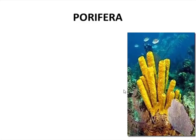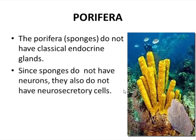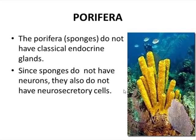First of all we will discuss the Porifera, or sponges. The Porifera do not have classical endocrine glands. These sponges also do not have neurons, and they also do not have neuro secretory cells or neuropeptides.